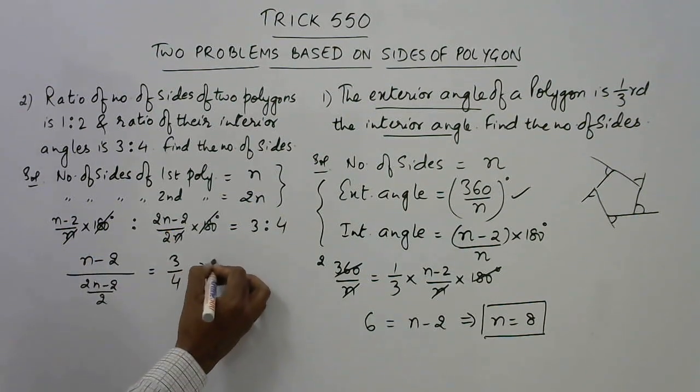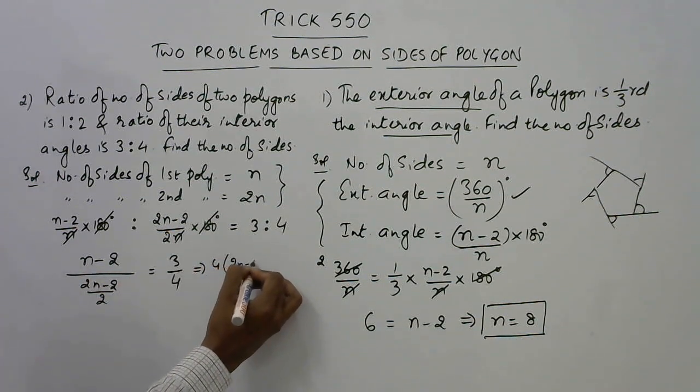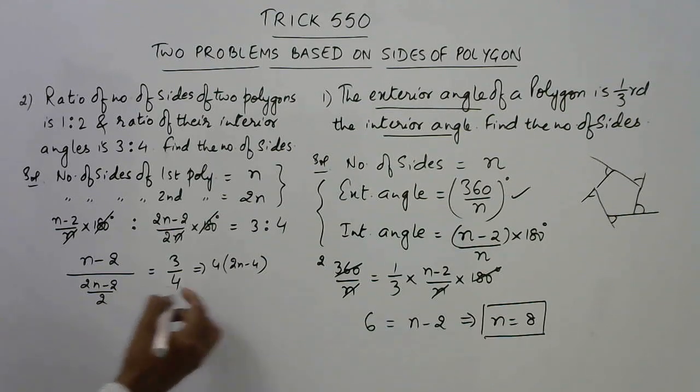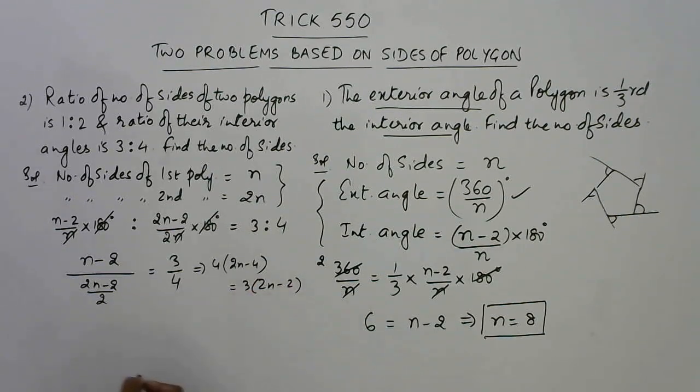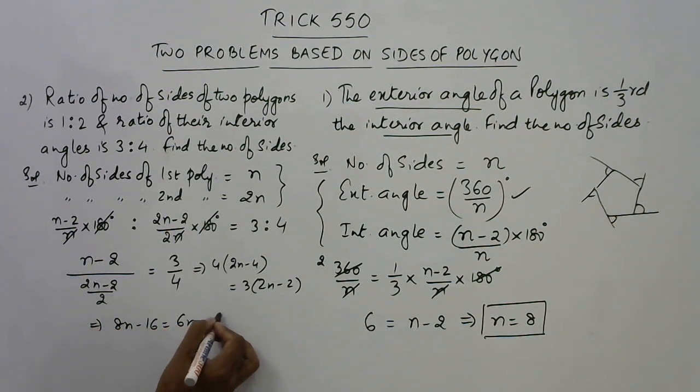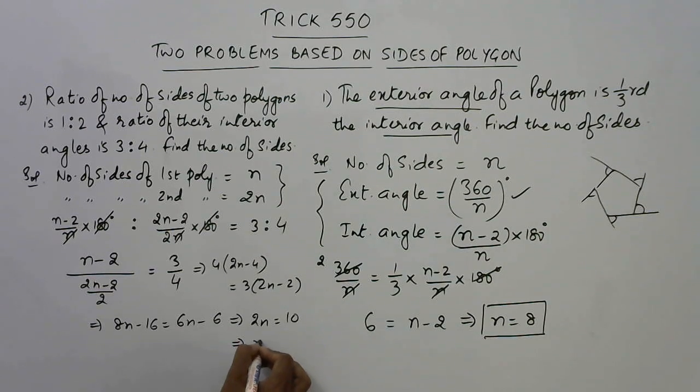So this becomes 4 times, I am cross multiplying also, (2n minus 4) equal to 3 times (2n minus 2). So that gives us 8n minus 16 equal to 6n minus 6, or 2n equal to 10, which gives us n equal to 5. Therefore, the number of sides of the polygon is 5.